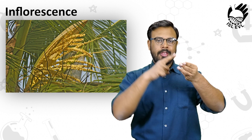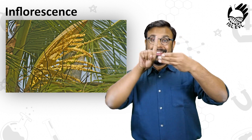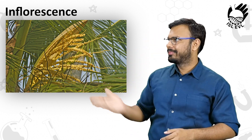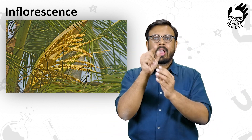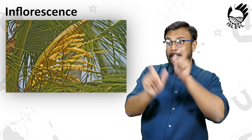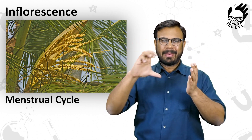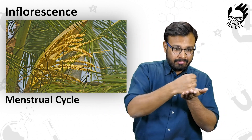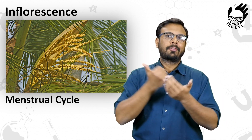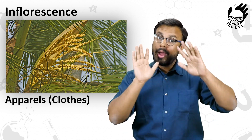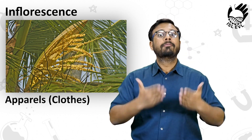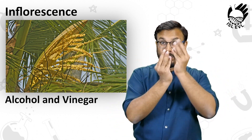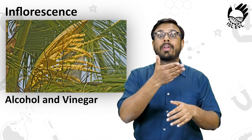The first part which can be used are the flowering heads, or the inflorescence. The flowers can be used for the treatment of hormonal changes in the menstrual cycle. They are also used in the creation of clothes and apparels, and in the production of alcohol and vinegar.